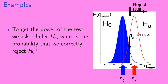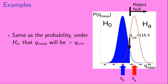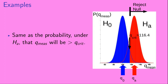To get the power of the test, we ask: under the alternative hypothesis h-a, what is the probability that we will correctly reject the null hypothesis h-naught? This is the probability under h-a that q-measured will be greater than q-critical, and that probability is given by the red area under the h-a curve.